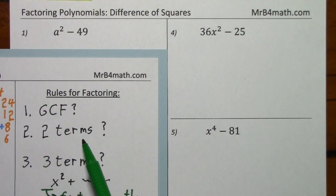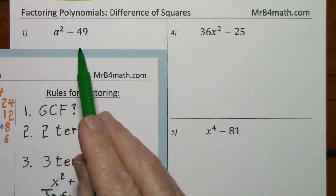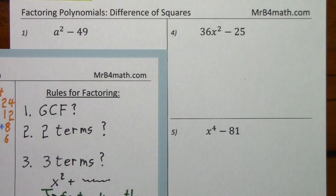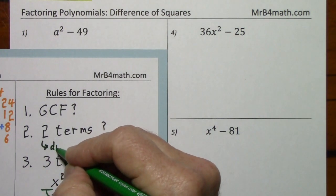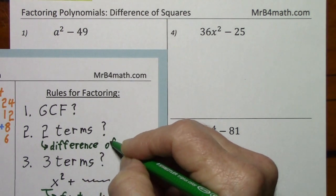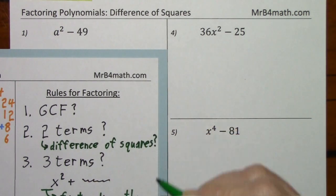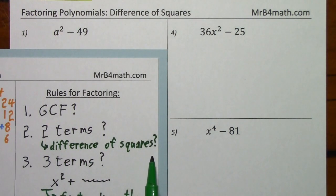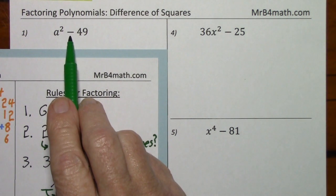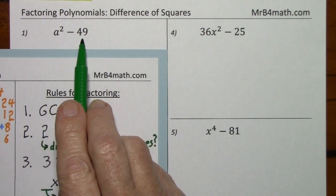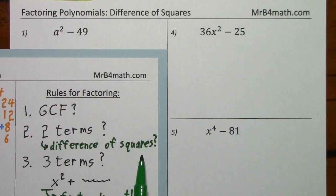Number two: do you have two terms? In this case, yes. The question you ask if you have two terms is, do you have a difference of squares? Here we have a difference, and each of these is a perfect square. So yes, we have a difference of squares.